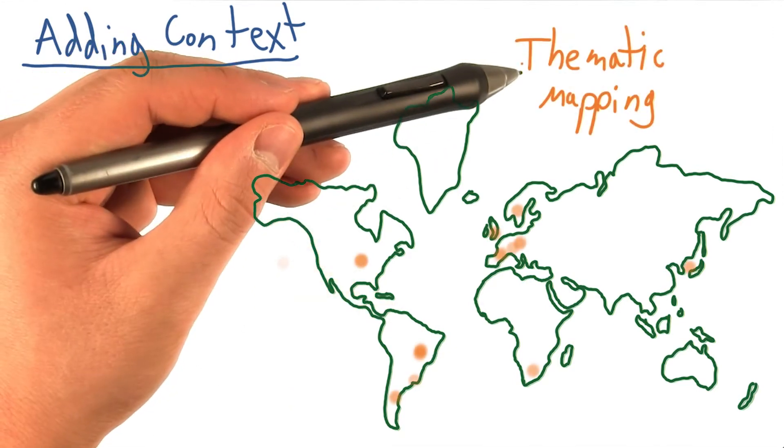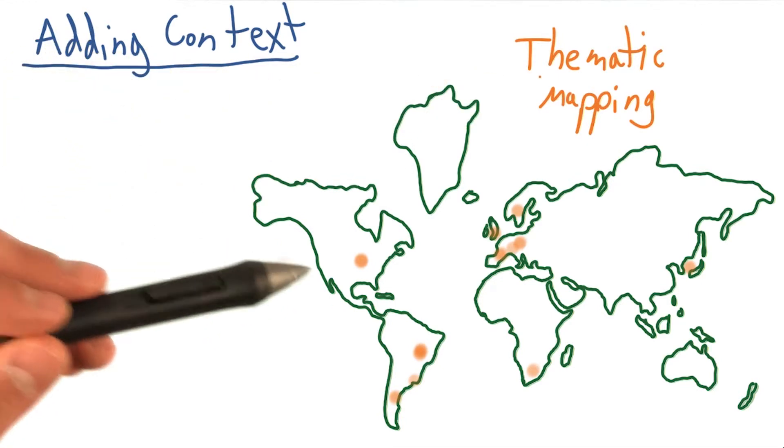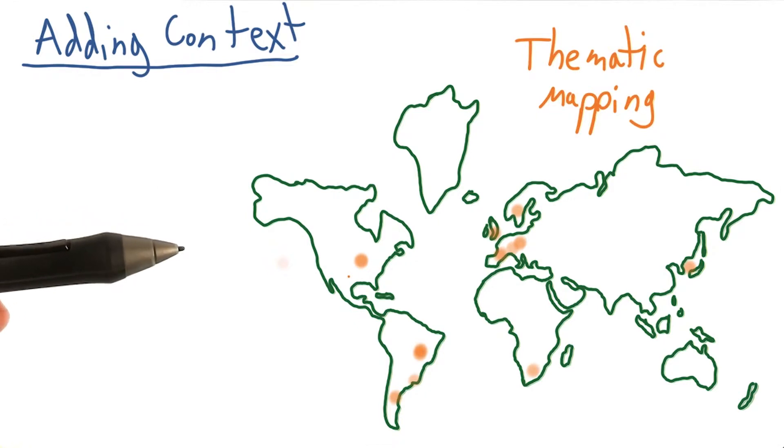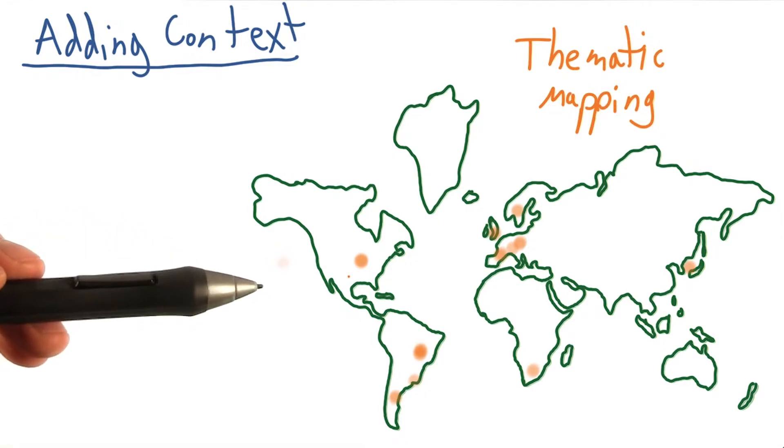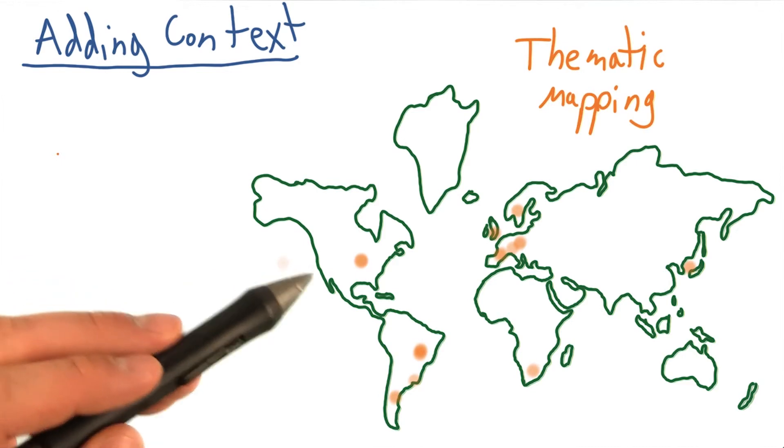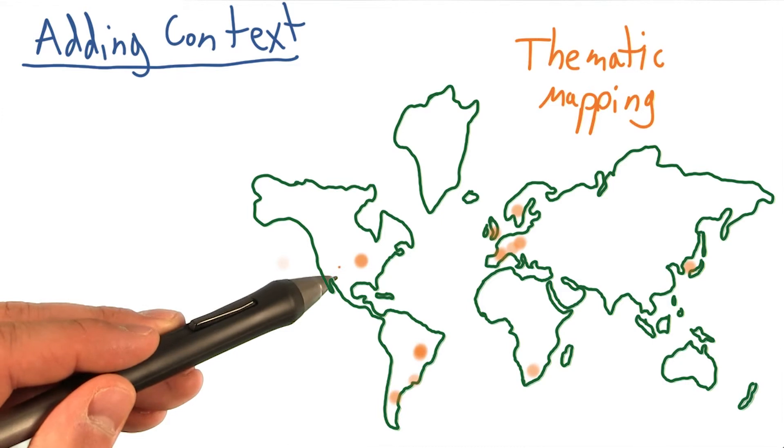This is often referred to as thematic mapping, which refers to the fact that maps with such data often represent a specific topic or, you guessed it, theme. In our case, the theme will be the World Cup. And thematic maps are often implemented by adding some additional context by leveraging some data plotted on the map.